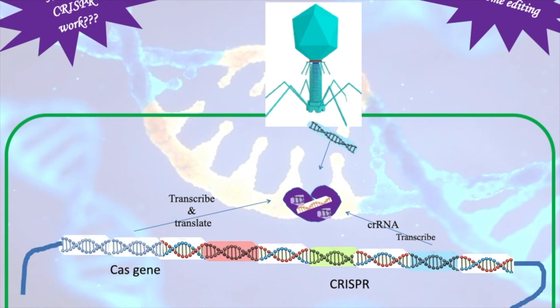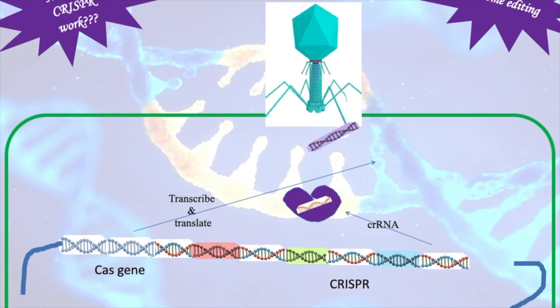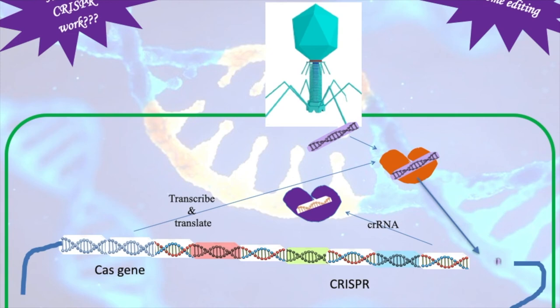This is what the Cas9 and CRISPR RNA do — because the bacteria was already infected previously, it was able to fight against that particular virus. If the viral DNA was not encountered before, then the Cas gene instead transcribes into a different protein called Cas1 protein. Cas1 engulfs the viral DNA released from the virus, breaks it down, and incorporates that spacer into the existing DNA sequence — developing a memory cell — so the bacteria can fight that virus in the future.